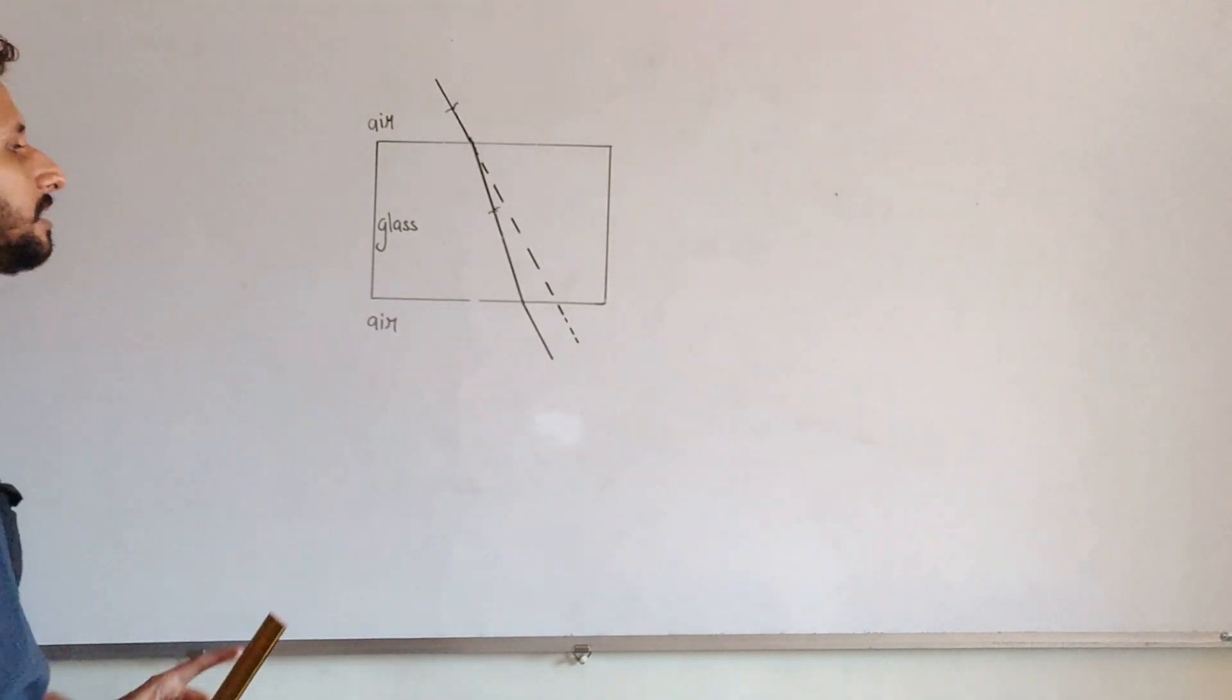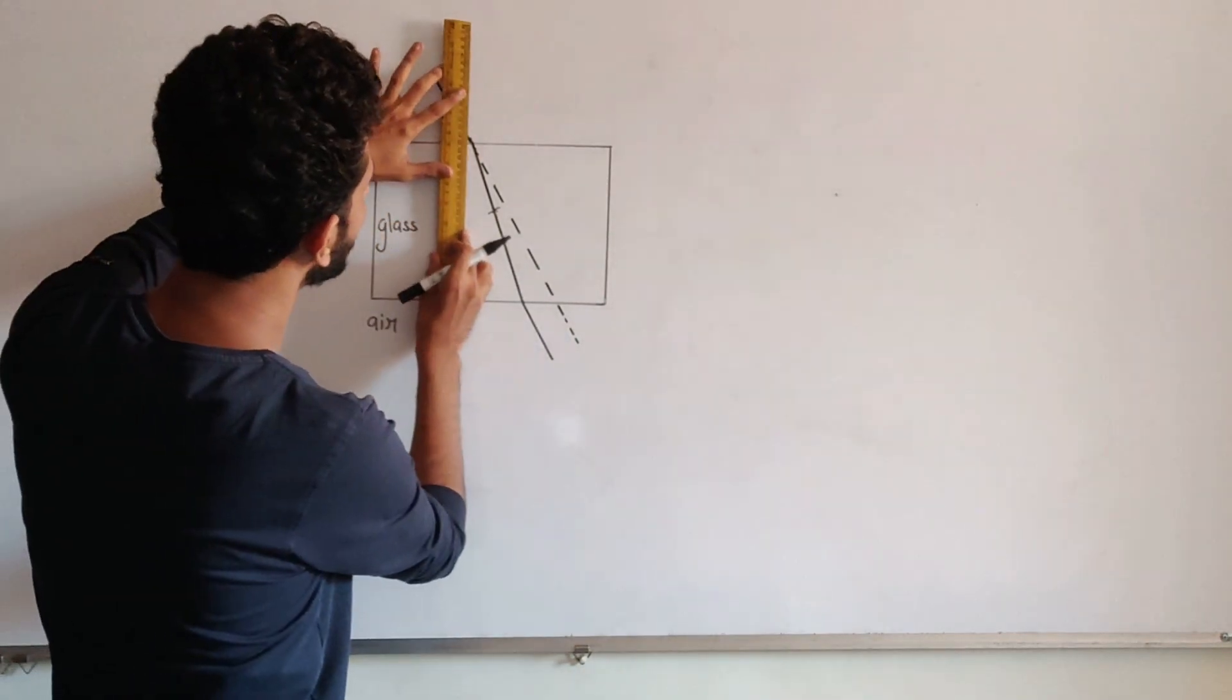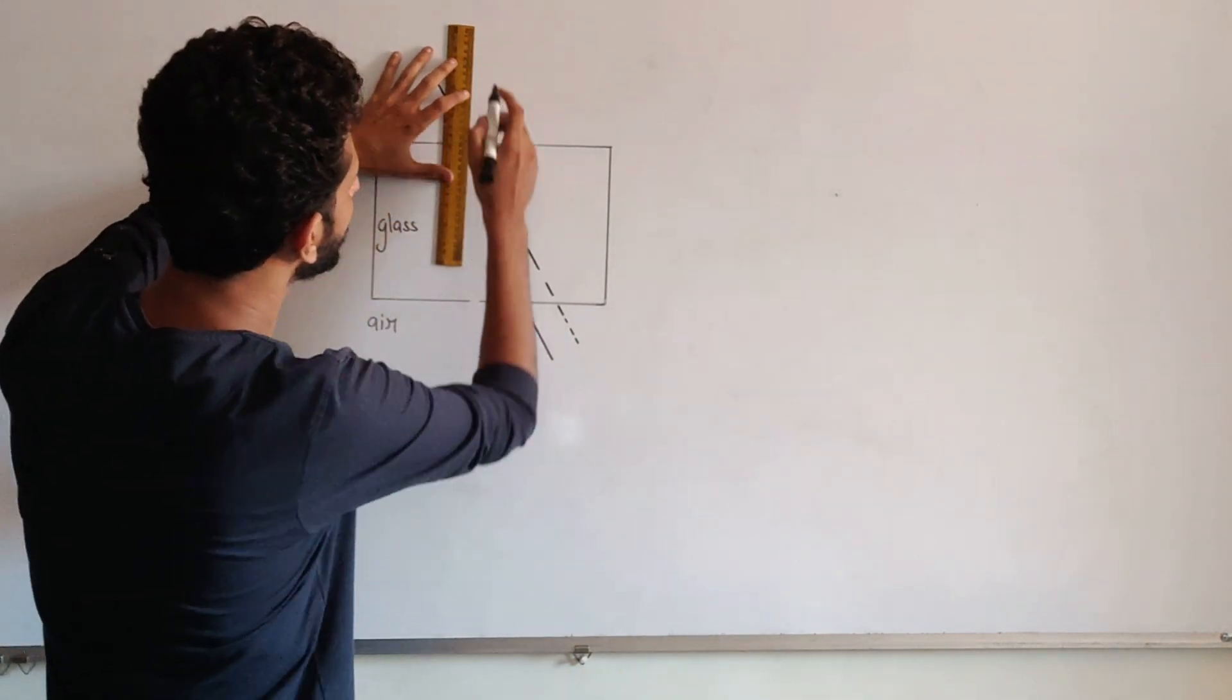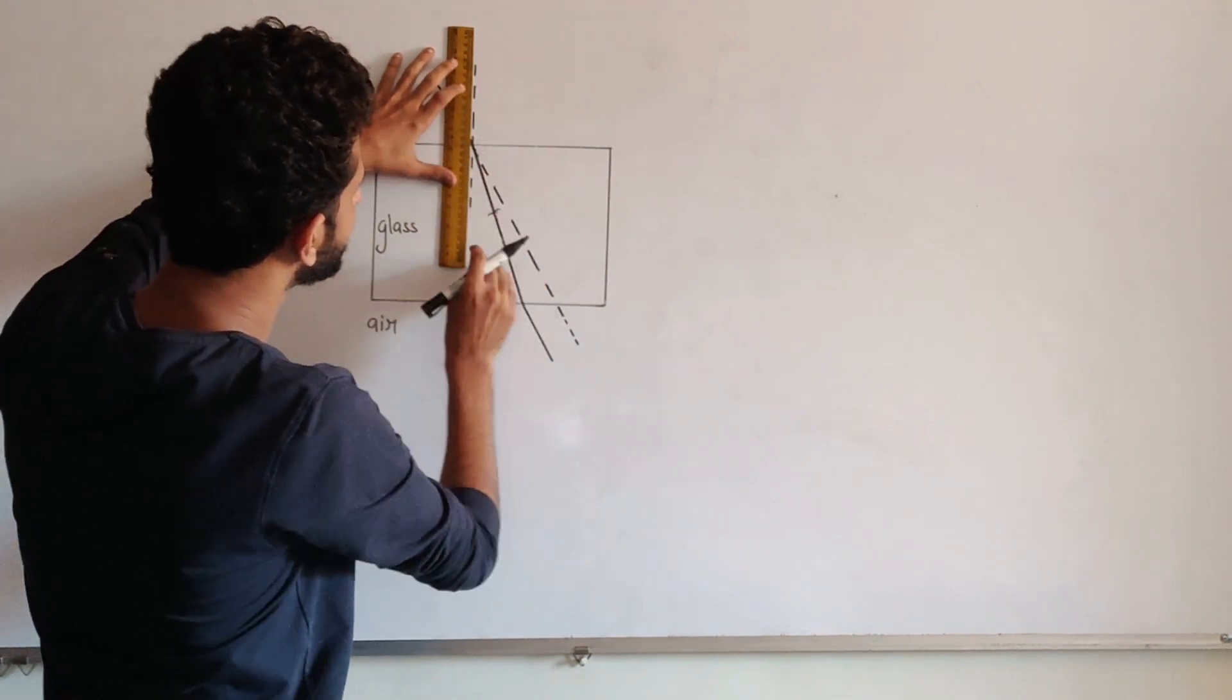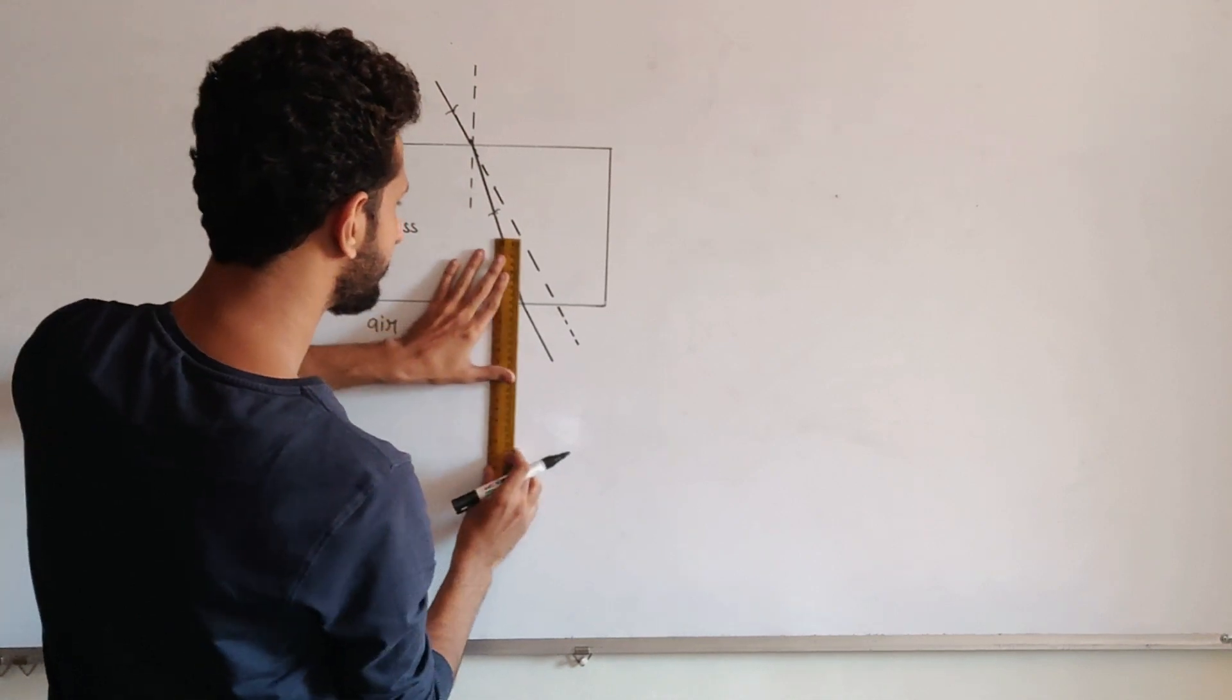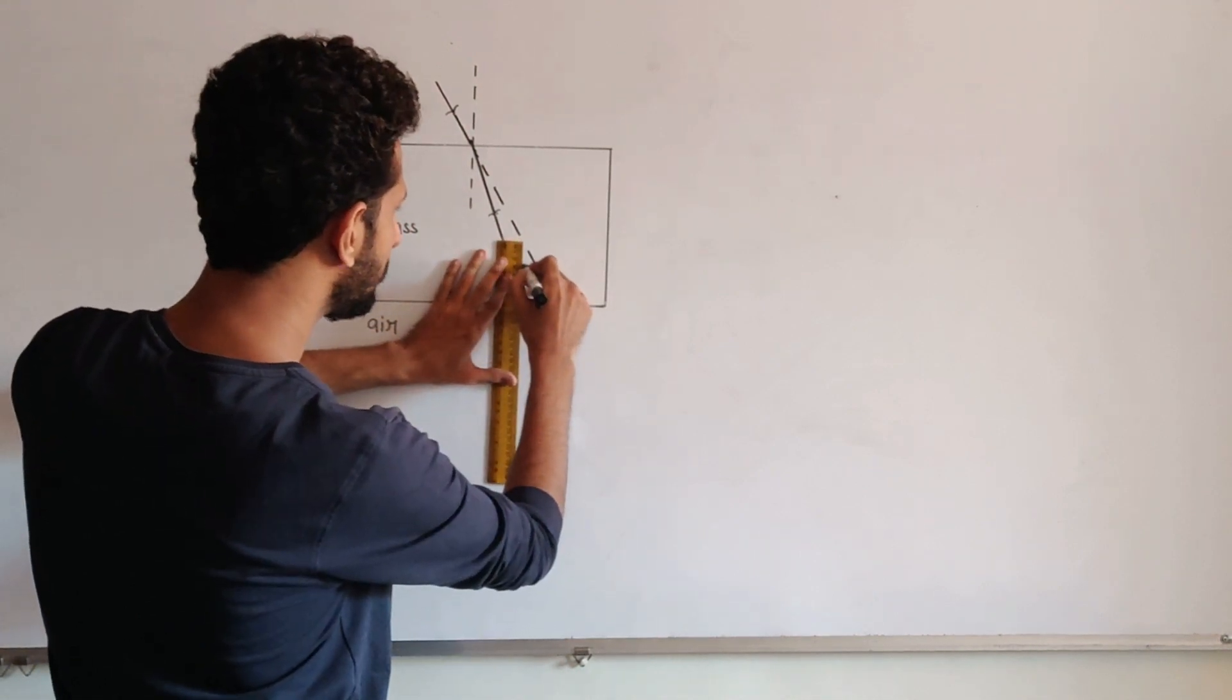So both the side extension has been done and now the last thing is to draw the normals. So here we are done with the normals.